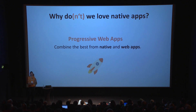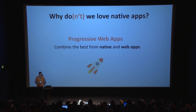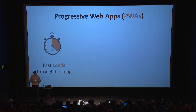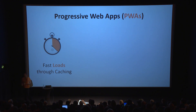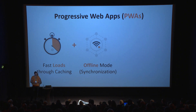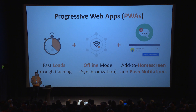The idea of Progressive Web Apps really boils down to combining the best from native apps and web apps. A progressive web app wants to be as fast as native apps — it loads fast, you can do that by caching. It has an offline mode, which means that even though your network might be temporarily inaccessible, you can still serve your users with useful data. And you have mechanisms very similar to native apps: you can add your web app to the home screen, and you can send push notifications.